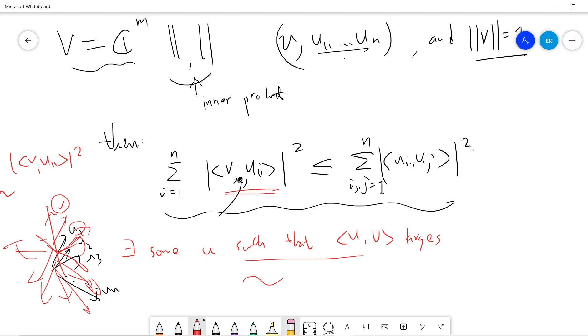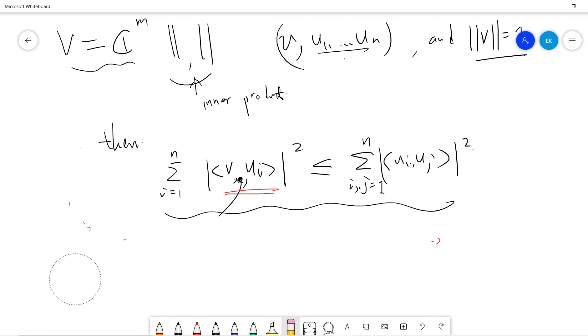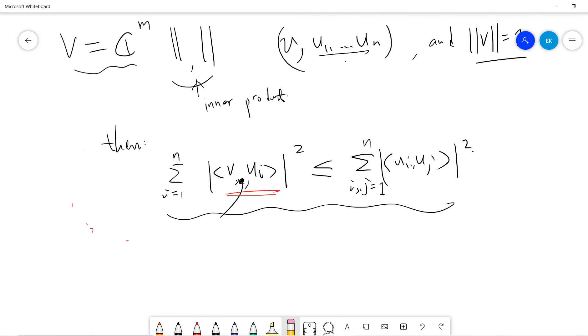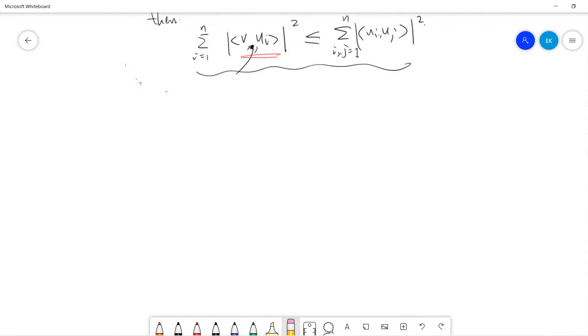So this is just the heuristic argument, so let's see a proof. So this proof is from Cauchy-Schwarz, let's see a proof.